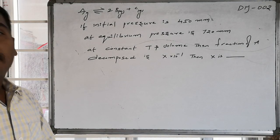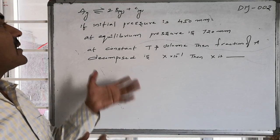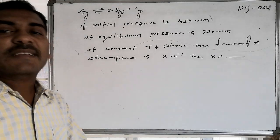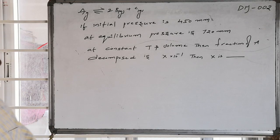Yes, there is a gas A. A is undergoing decomposition and it is producing two B gas molecules and one C gas molecule.